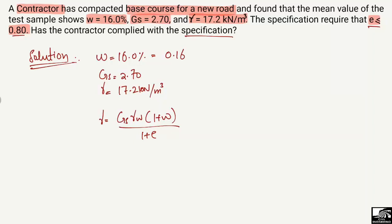In this formula, gamma (unit weight of soil) is given, Gs is given, and gamma_w — the unit weight of water — is 9.8 kilonewton per cubic meter, which we should remember. Water content w = 0.16 is also given. The only unknown is the void ratio e in the term (1 + e).